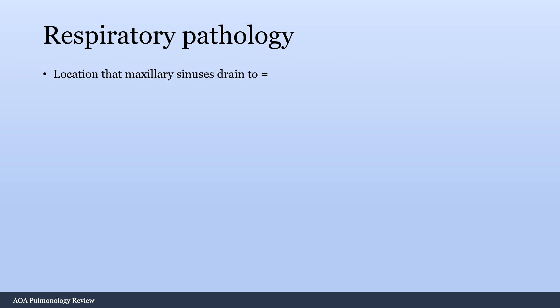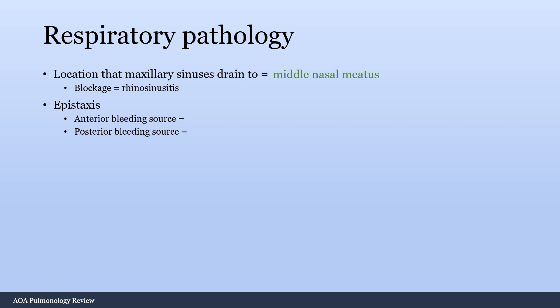I'm just going to be rapid-fire and interactive. So what's the location that your maxillary sinus is drained to? Is it the superior meatus, middle meatus, or inferior meatus? The answer is the middle nasal meatus. That's important because blockage of this causes rhinosinusitis. Epistaxis is the next thing that First Aid goes through.